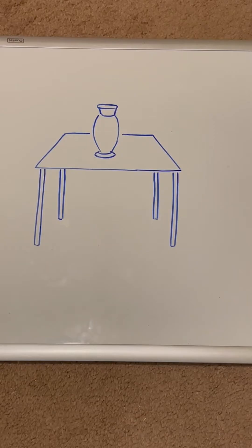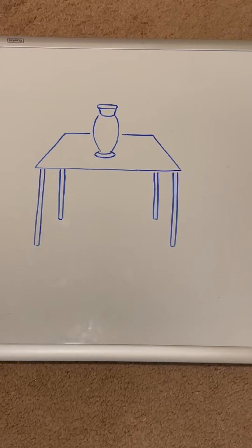For example, if you put a vase on a table, the weight of the vase would be transferred to the tabletop, down through the legs of the table, and out into the ground. Both the tabletop and the legs of the table have to be able to support the weight of the vase.